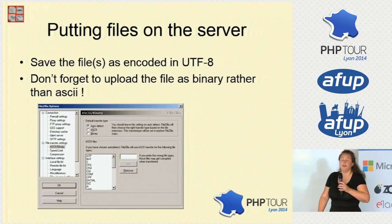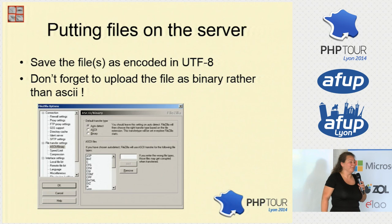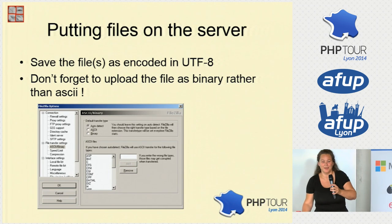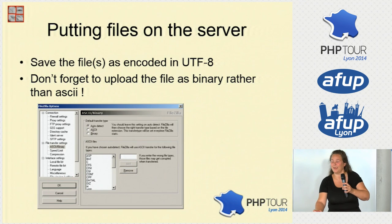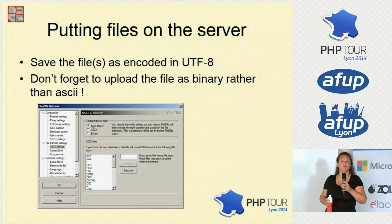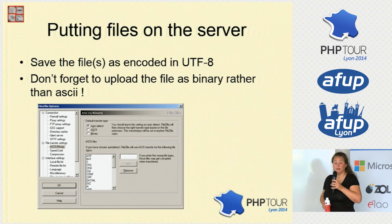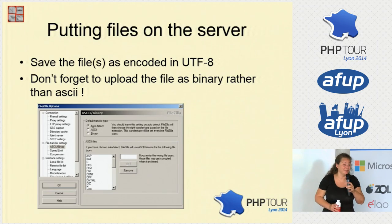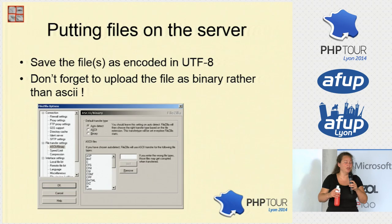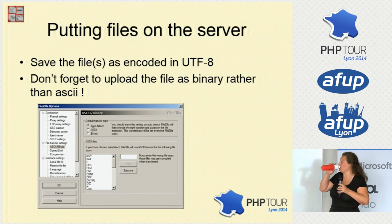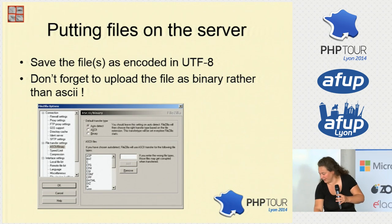Communication with the client: first, putting files on the server. Many FTP programs with auto-detect will say HTML should be sent over as ASCII. If you use Unicode or UTF-8, you don't want it sent as ASCII — it will corrupt your data. Make sure that in your FTP program, any files where you use Unicode are removed from the ASCII defaults list.